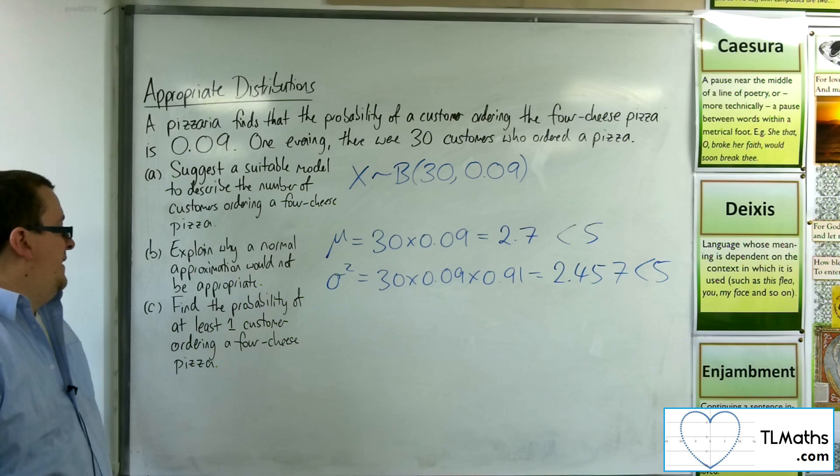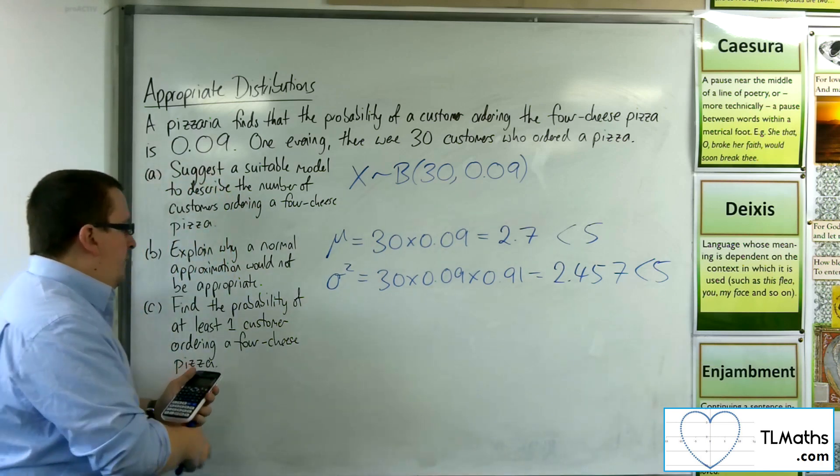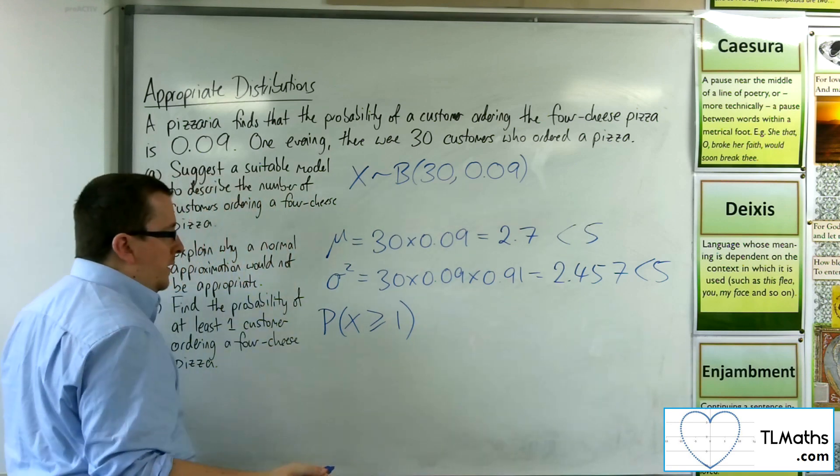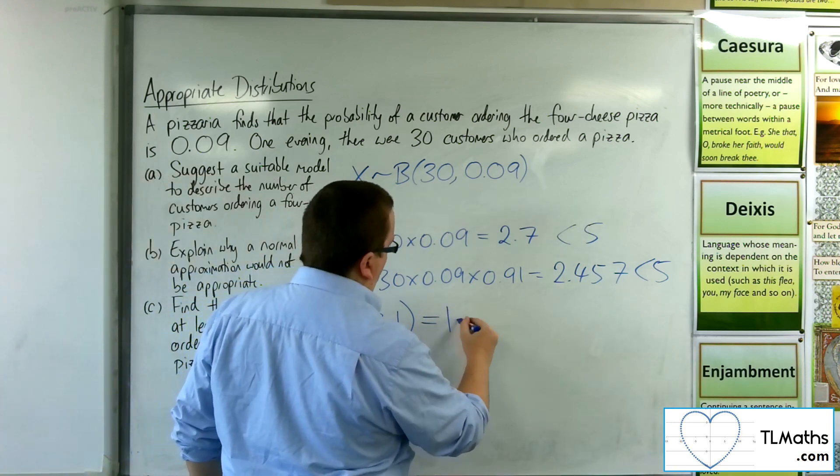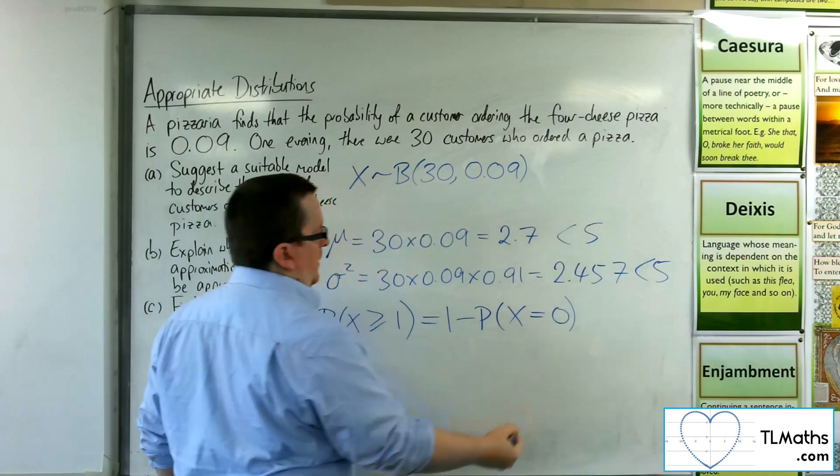Then, find the probability of at least one customer ordering a 4-cheese pizza. We're going back to it being a binomial distribution. If I want at least 1, that's greater than or equal to 1, which is the same as 1 take away the probability of x being less than or equal to 0, or just equaling 0.